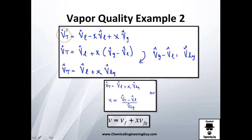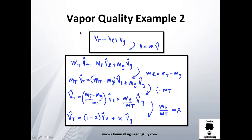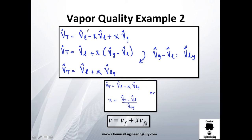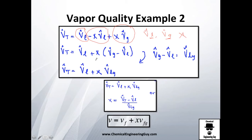Now I have the specific volume of the total mixture. Let me multiply: 1 times the liquid specific volume stays the same, and minus x times the liquid specific volume gives that term. So we have specific volume of the gas, specific volume of the liquid, and vapor quality x.